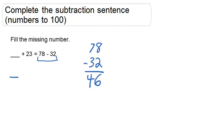So we can rewrite this as blank plus 23 equals 46. Okay, so now we know we're adding 23 to some number and getting 46. So it's going to be a two-digit number.